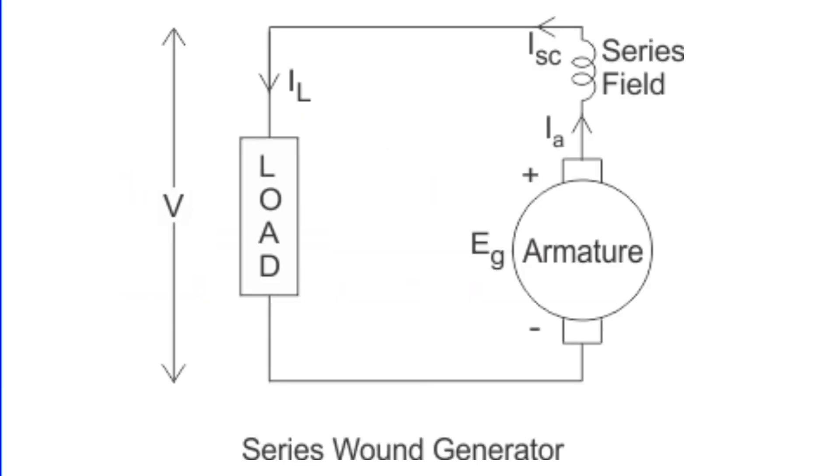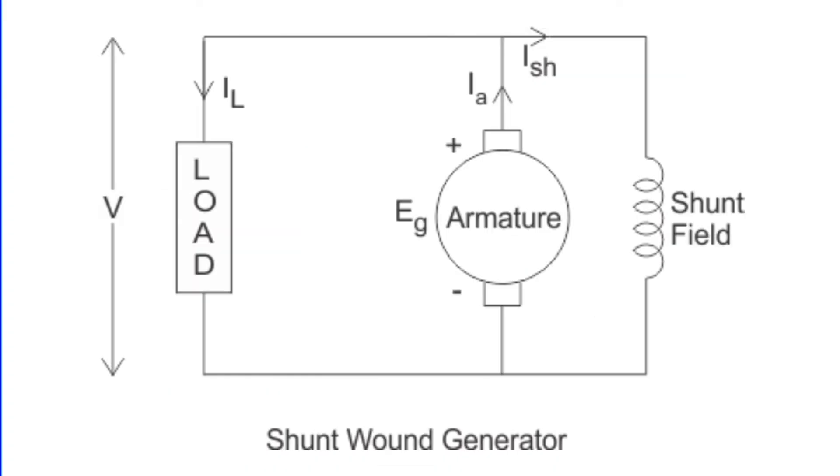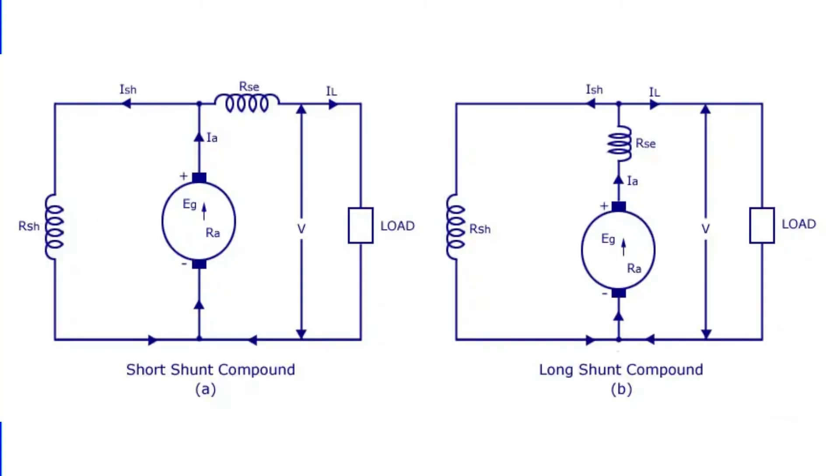Series generators, where the field winding is connected in series with the armature, are not commonly used due to their unstable voltage at varying loads but find their place in arc welding. Shunt generators have their field winding connected parallel to the armature and are used in battery charging and lighting due to their ability to provide steady voltage. Compound generators combining features of both series and shunt are employed in applications like electric traction, where voltage stability under changing load conditions is crucial.